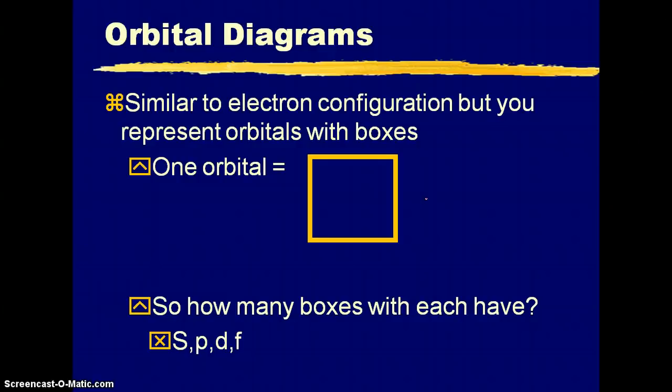All right, now let's look at orbital diagrams. Orbital diagrams are just a different way to represent the electron configuration. Now, our orbitals are going to be represented by a box. So how many boxes will each of the orbitals have? Well, s just has one, p has three boxes that are all connected, d has five boxes all connected, and hopefully you're realizing that this corresponds to the number of orbitals for each per energy level, and then f has seven boxes all connected.